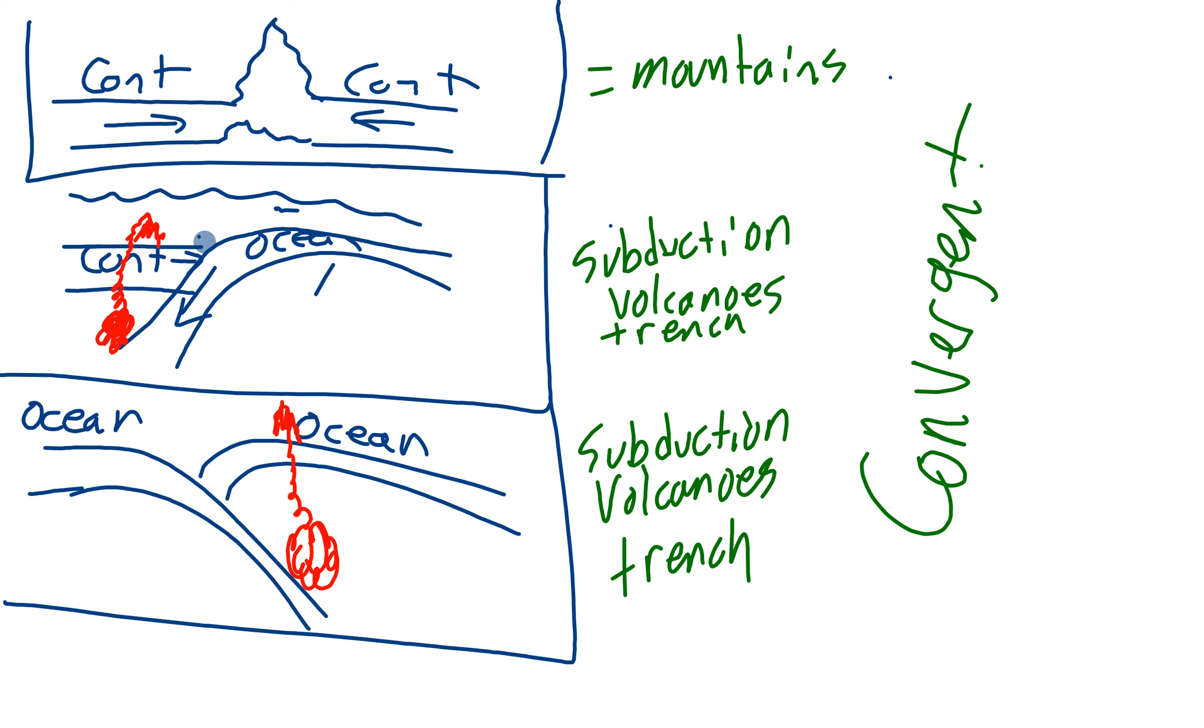If you have a continental plate and an oceanic plate, they're going to crash into each other and the denser oceanic crust is going to subduct under the less dense continental crust. And that's going to give you a subduction zone, a trench, and volcanoes. Because as the magma here builds up from the melting oceanic crust, it's going to start bubbling up. You're going to get volcanoes.